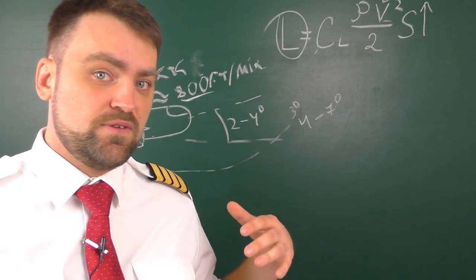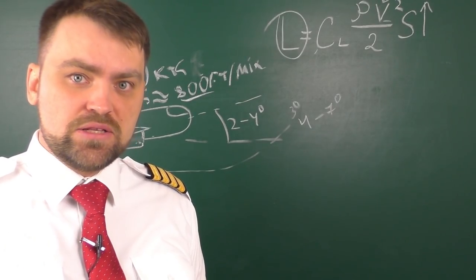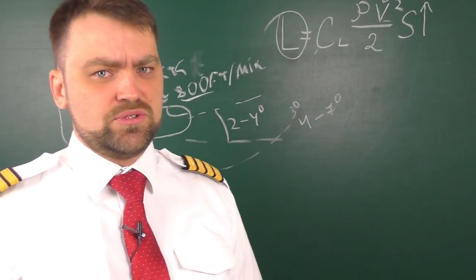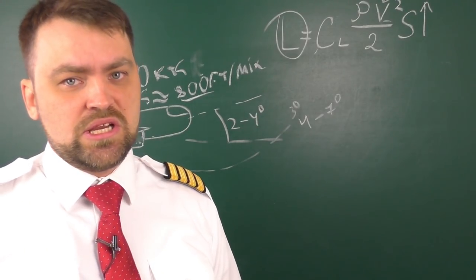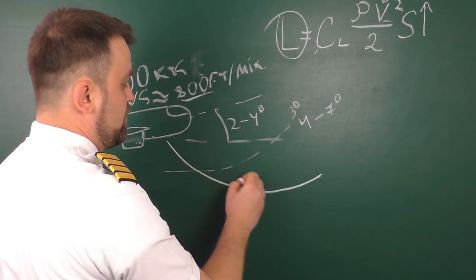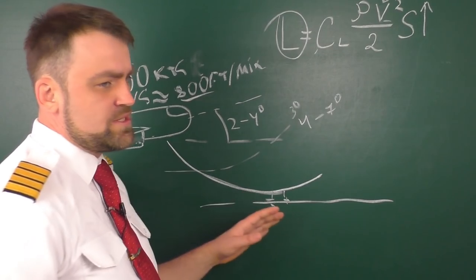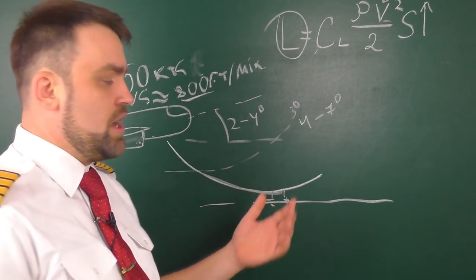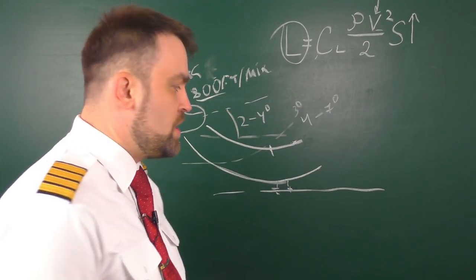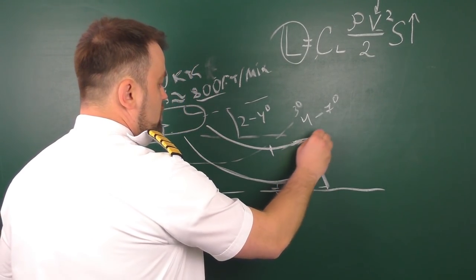We also need to reduce engine thrust during the flare process, and to compensate the loss in lift force we increase the angle of attack. We need to catch the point where the vertical speed has been reduced to around 200 feet per minute, and there we touch the ground. We are basically guessing where to flare. If you flare too high, you may lose airspeed too early and then the airspeed will drop lower and lower, possibly resulting in a hard landing.